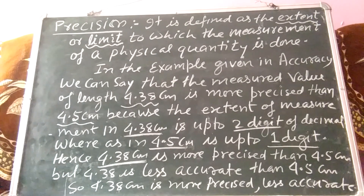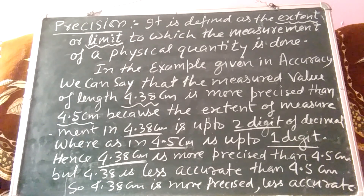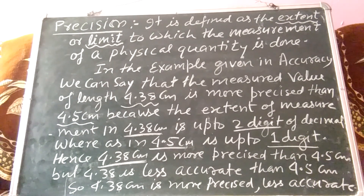In the previous example, we measured the length with an instrument whose resolution is 0.1, meaning the extent is up to one digit after the decimal. And when measuring with a resolution of 0.01, the extent of measurement is up to two digits after the decimal.